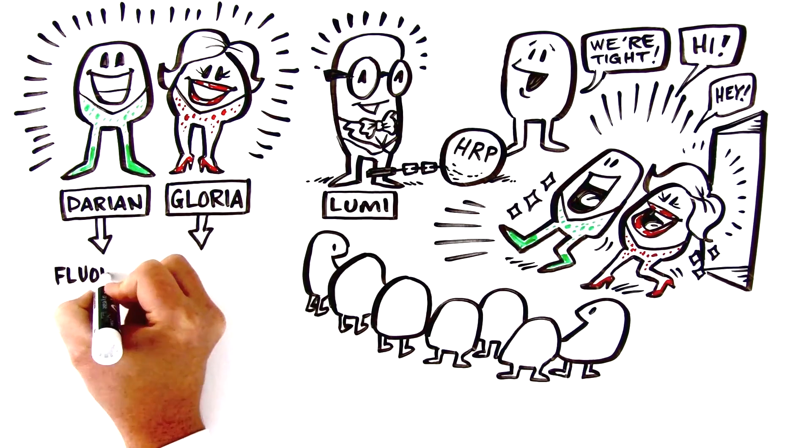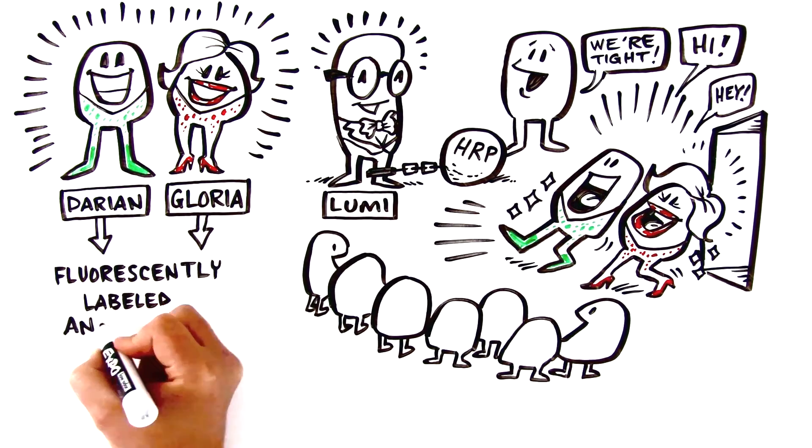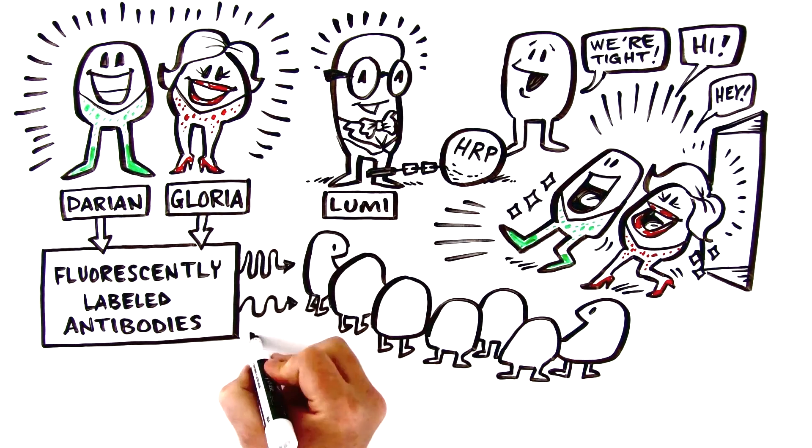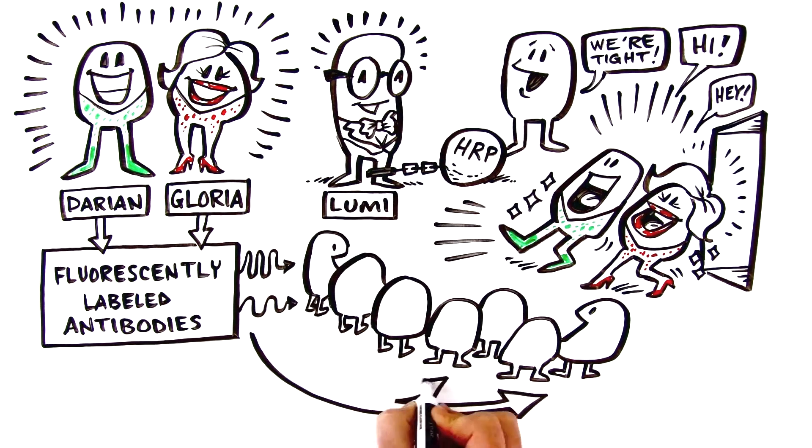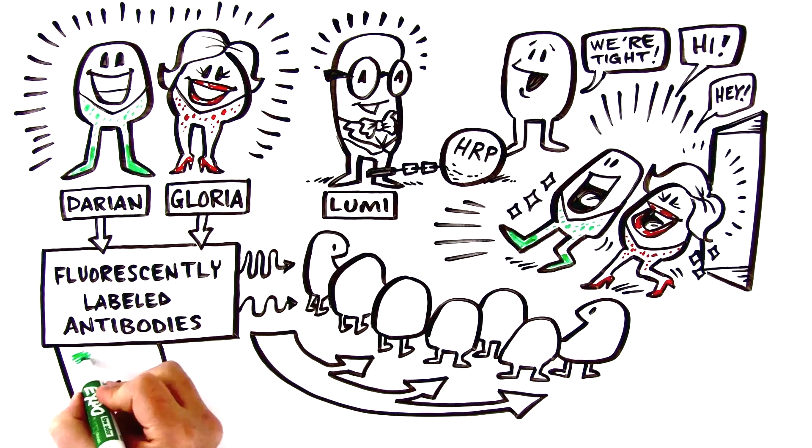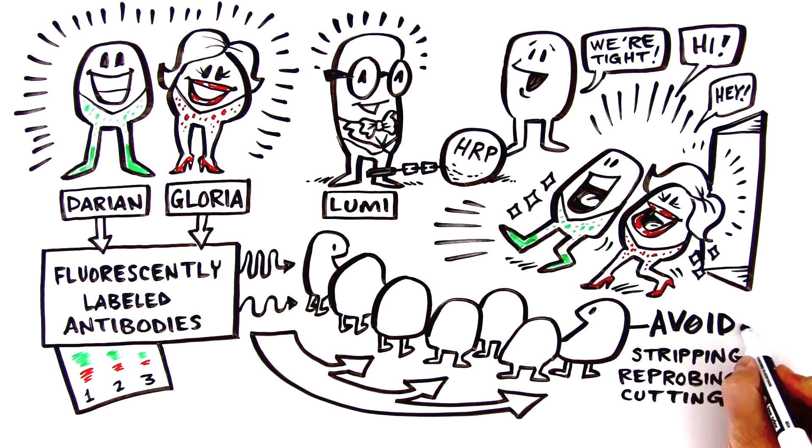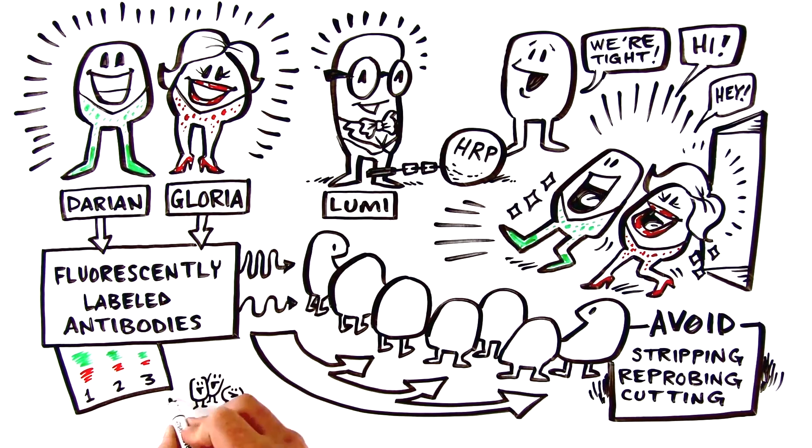Now imagine that Darian and Gloria are actually fluorescently labeled antibodies, which emit distinct wavelengths of light that allow you to detect multiple proteins on your Western blots. Darian and Gloria allow researchers like you to avoid stripping, reprobing, and cutting your blots, providing a crystal clear picture of multiple target proteins at once.